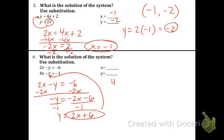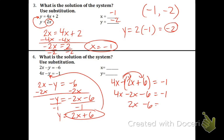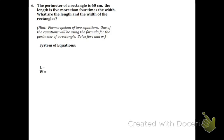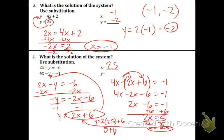So now we have 4x minus parentheses 2x plus 6. The parentheses are necessary because what you're going to do next is share the negative — technically negative 1. So we have 4x minus 2x minus 6 equals negative 1. 2x minus 6 equals negative 1, plus 6 on each side. 2x equals 5, divide by 2, and you get x equals 2.5. Take that and plug it in for y in the circled equation. 2 times 2.5 plus 6: 2.5 times 2 is 5, and 5 plus 6 equals 11. So the coordinate point is 2.5 comma 11.